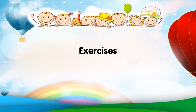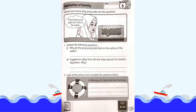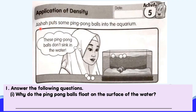Now, it's time to do some exercises. Please get ready your Science Year 3 activity book and turn to page 67. This is the task you are going to do today. Application of density: Aisyah puts some ping pong balls into the aquarium. Look at this picture. Let's read this one together — these ping pong balls don't sink in the water. Aisyah is wondering why the ping pong balls, or table tennis balls, don't sink in the water as she put them into the aquarium.